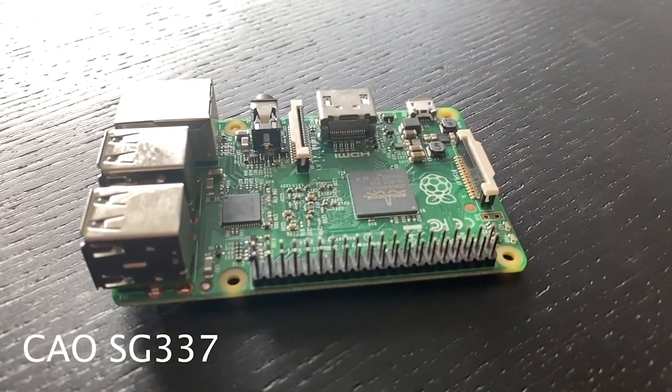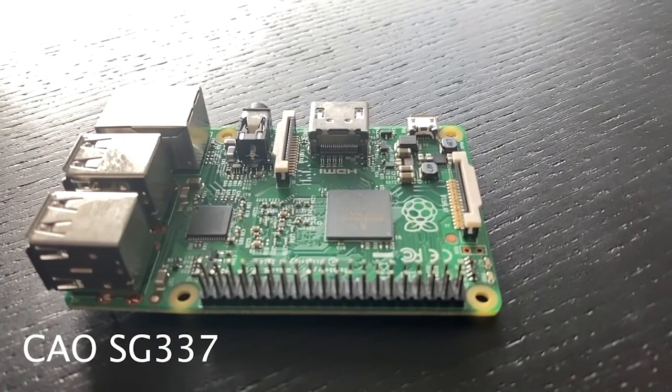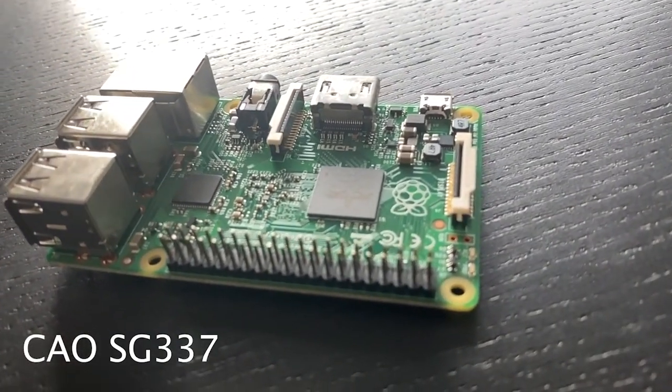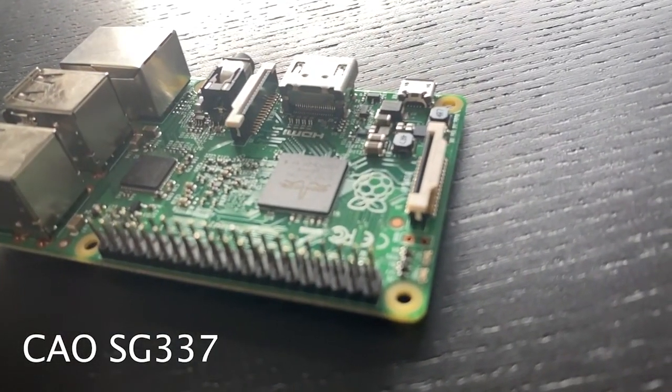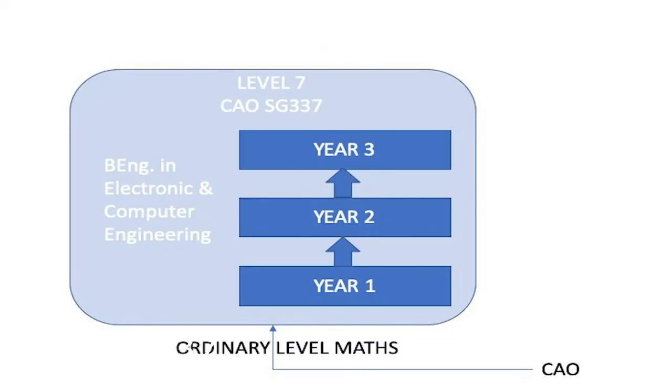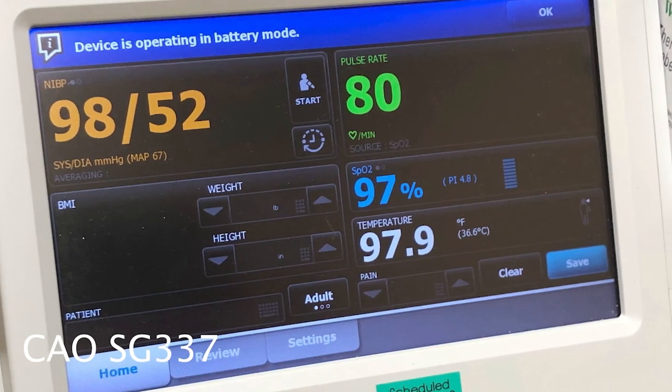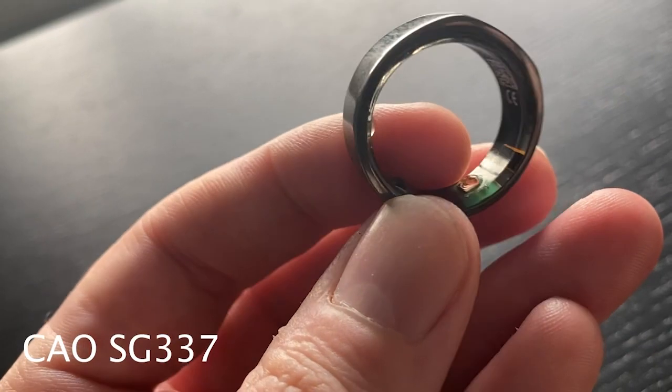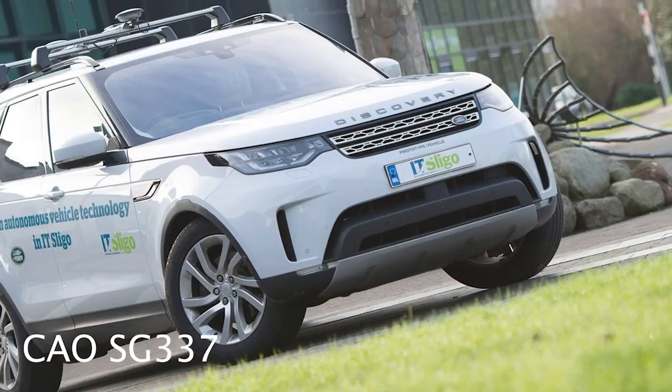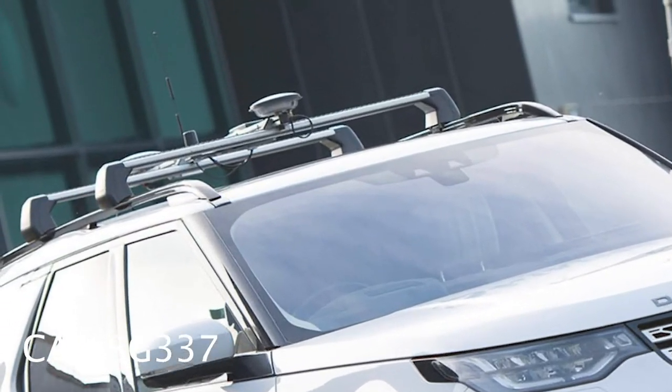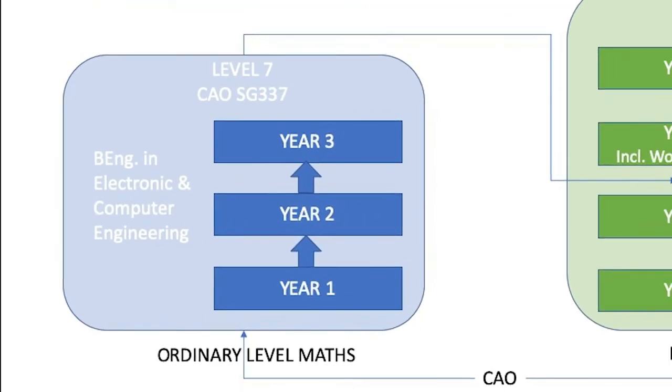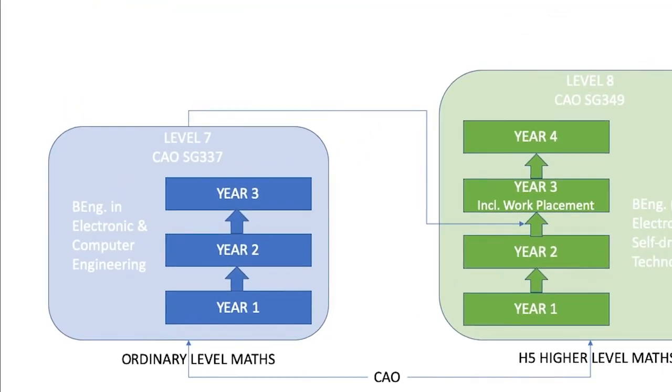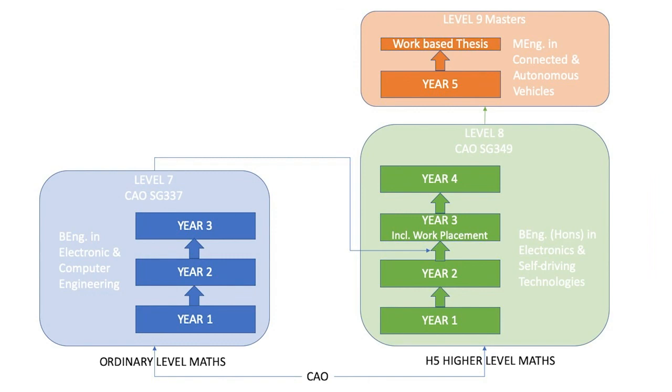If you are interested in technology or engineering, but are not doing higher level maths, why not consider our level 7 in electronic and computer engineering? This is a three-year program that looks at the design and development of embedded electronic systems. These are the medical devices that keeps us healthy, the consumer devices that keeps us entertained, or the controlled systems that keeps us safe on the road. You can then progress onto the level 8 in electronics and self-driving technologies, and from there to the masters. Check out the link below for more information.